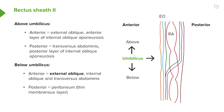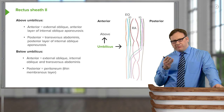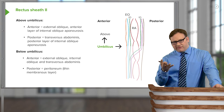Deep to external oblique, picked up in green, we can see internal oblique's anterior layer. Also in green, above the umbilicus, we can see internal oblique's posterior layer. So internal oblique has anterior and posterior layers — and remember, above the umbilicus it is divided.